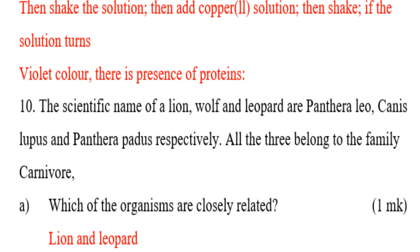Question number ten: The scientific names of a lion, wolf, and leopard are Panthera leo, Canis lupus, and Panthera pardus respectively. All three belong to the family Carnivora. Which of the organisms are most closely related? The two animals that are closely related are the lion and the leopard.